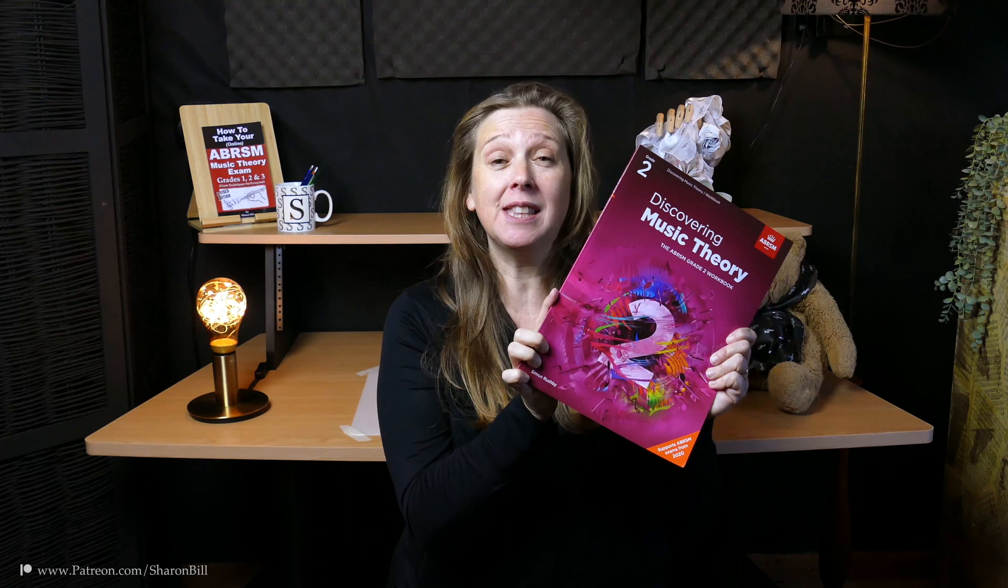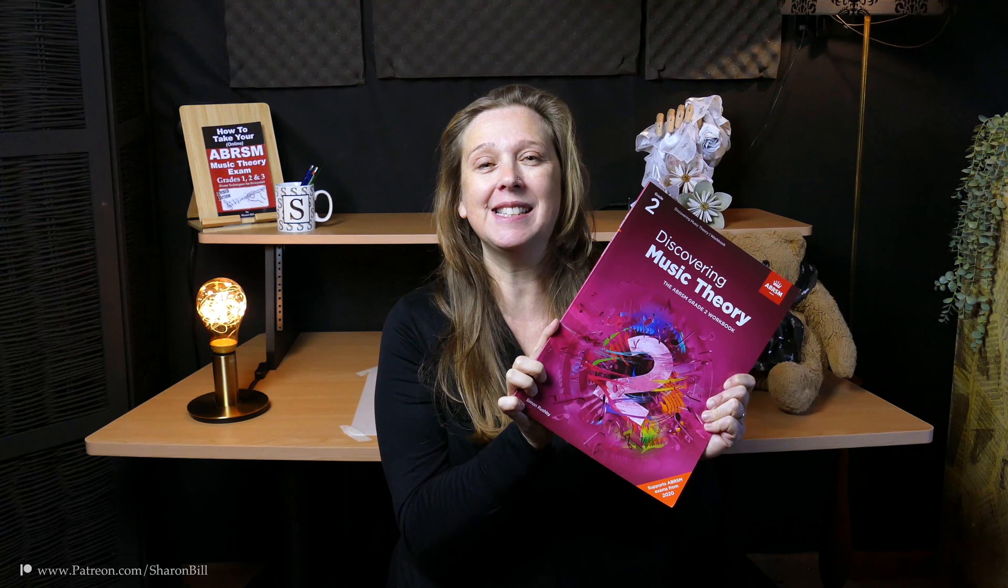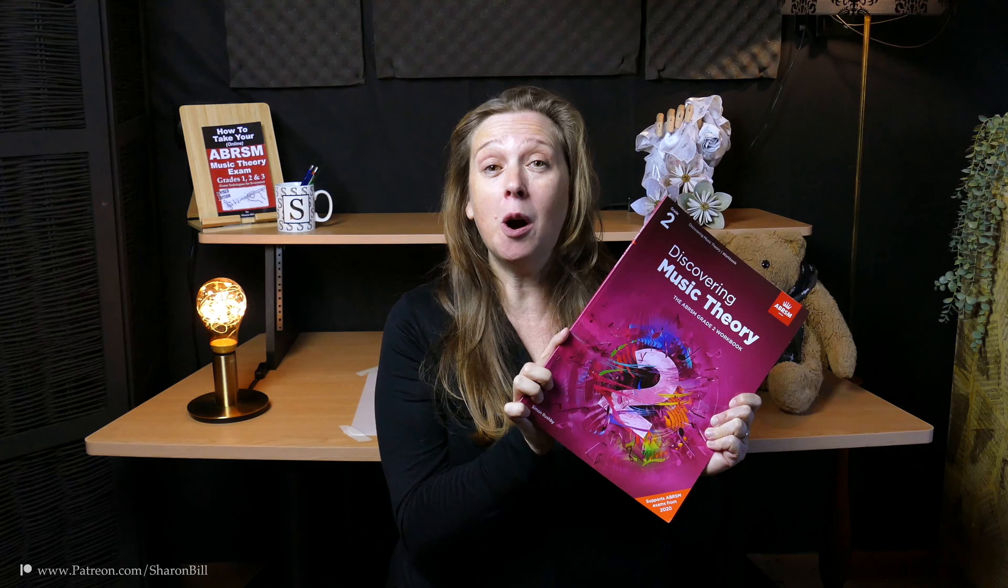Hi, I'm Sharon Bill. My lessons now move on to chapter 6 of the Grade 2 Discovering Music Theory workbook. In this chapter we look at the new topic of harmonic minor scales—A minor, E minor, and D minor—and the topic of related keys where major and minor keys share the same key signature.